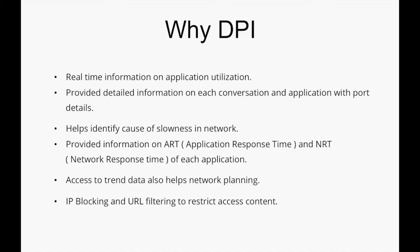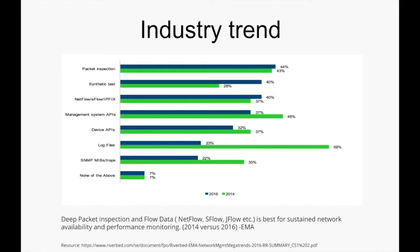Here we have taken a survey made by EMA to know how widely DPI and flow data technologies are being used by companies around the world. Based on the survey, comparing 2014 and 2016, we can see that Deep Packet Inspection and flow technologies like NetFlow, sFlow, jFlow, IPFIX, and NetStream are widely used by many companies. Also, DPI is not a new technology — it has been used by enterprises like NASA and AT&T to find culprits in the network and resolve network-related issues.